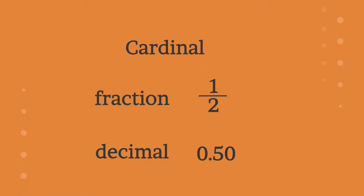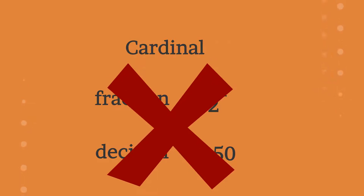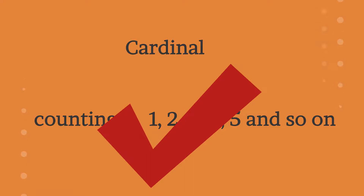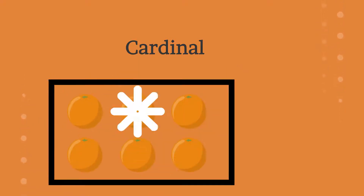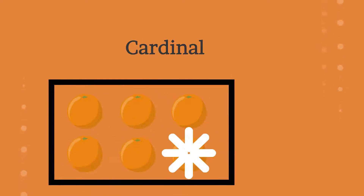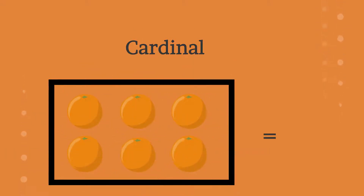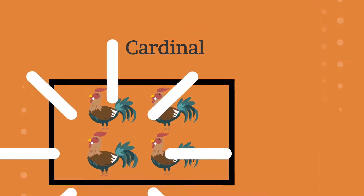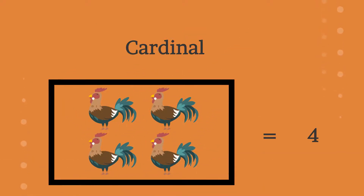In addition, cardinal numbers do not consist of fractions or decimals. They are only used for counting. For example, there are six oranges. There are four chickens.